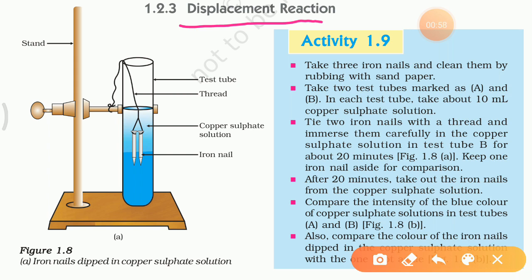In this activity, we will take 3 iron nails and clean them by rubbing with sandpaper. Now we will take 2 test tubes and mark them A and B. In each test tube, we will take 10 ml copper sulphate solution. Now tie 2 iron nails with thread and immerse them carefully in the copper sulphate solution in test tube B for about 20 minutes.